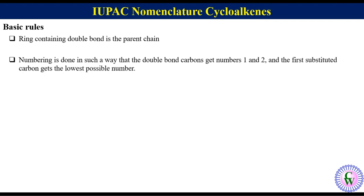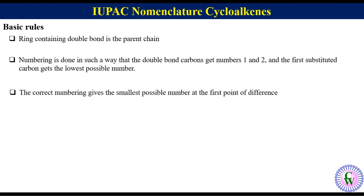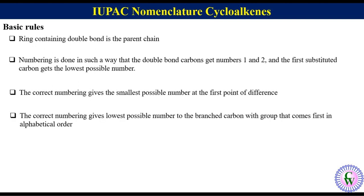If counting in either direction leads to the same number for the alkene carbons and the same lowest number or numbers for one or more substituents, then follow the rule of first point of difference, according to which the correct numbering gives the smallest possible number at the first point of difference. If there is a tie at all the points, then follow the alphabet rule, according to which the correct numbering gives the lowest possible number to the branched carbon with the group which comes first in alphabetical order.